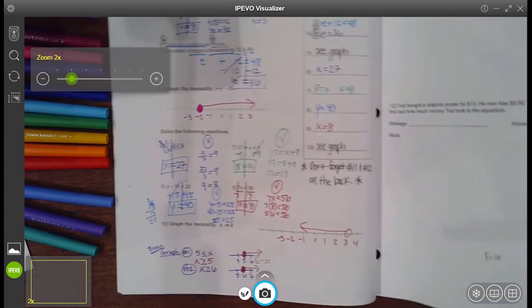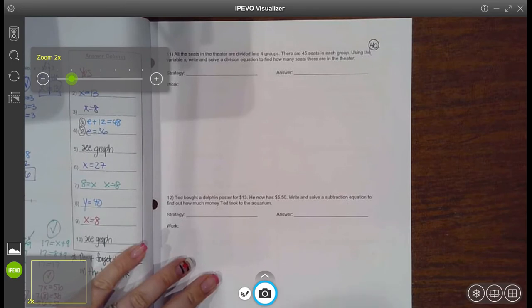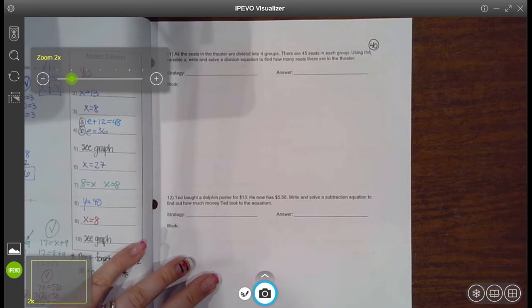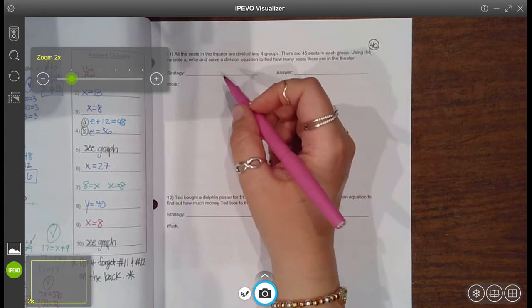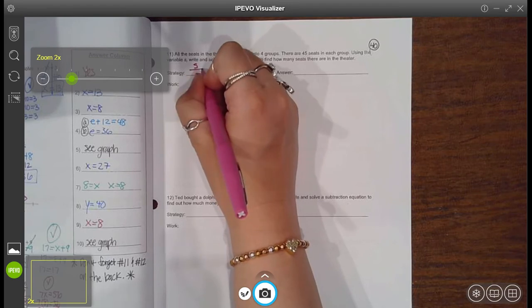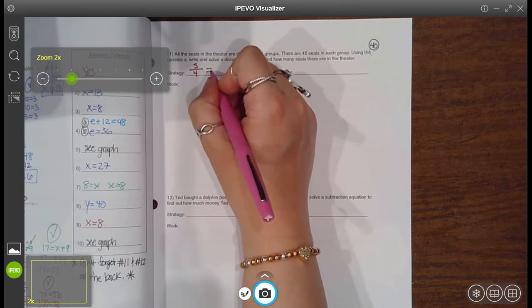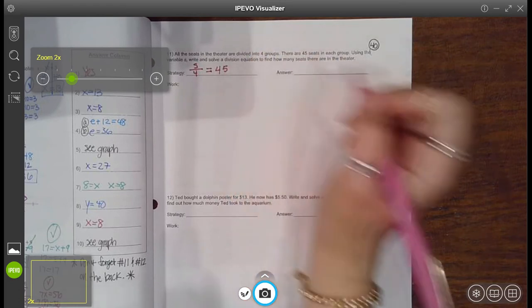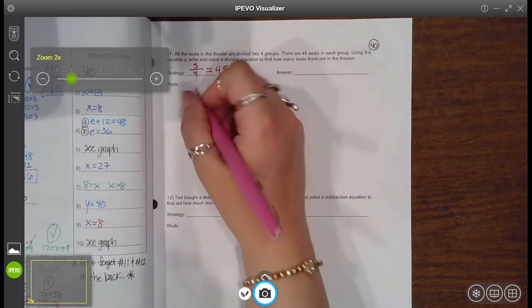Last two problems. Please try to set up these equations from the word problems and then try to solve them. The first one says, all the seats in the theater are divided into four groups. There are 45 seats in each group. Using the variable s, write and solve a division equation to find how many seats there are in the theater. So it said that using the variable s is what they want. So use a lowercase s. So you have some amount of seats. We don't know what amount of seats. They're divided up into four groups. And then it's divided up equally so that each group has an equal amount of 45 seats. There's my equation. Think of that as the equation that they want.